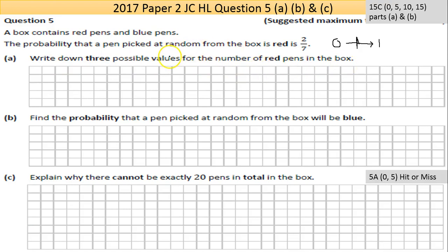It says write down three possible values for the number of red pens in the box. Now the basic concept here that runs through maths is that you can't have half of something. You can't have half a pen. It's either one pen, two pens, three pens, four pens.